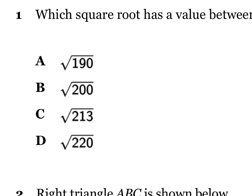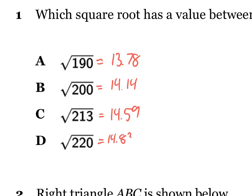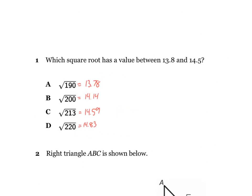I'm going to write down some of the answers I got. For 190 I got 13.78, for 200 I got 14.14, for C I got 14.59, and for 220 I got 14.83. So you are trying to figure out which one of those is between 13.8 and 14.5. I'm going to let you guys figure out the answer on your own.